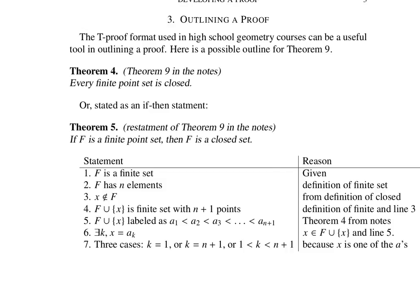Now there's three cases. X is either the first point, it's the last point, or it's one of the points somewhere in between. That's what we're listing here: k is either equal to 1, which means that x is the first point.